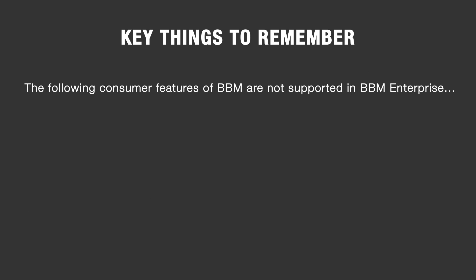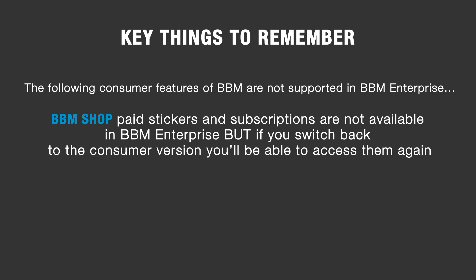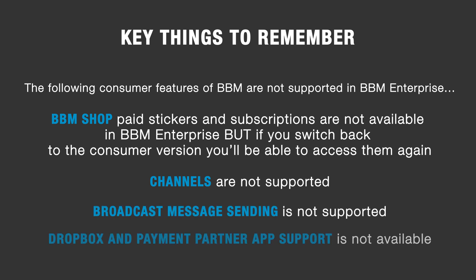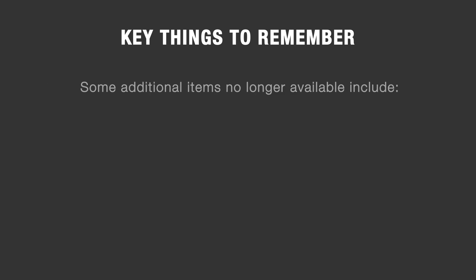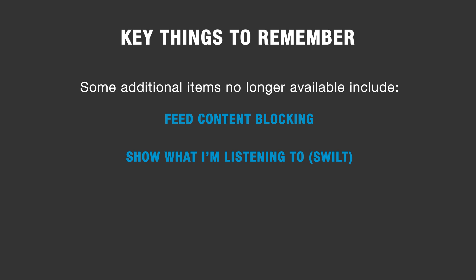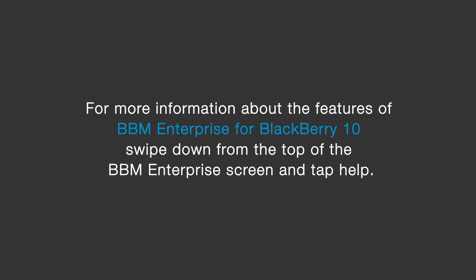The following Consumer features are not supported in BBM Enterprise: BBM Shop — paid stickers and subscriptions are not available, but if you switch back to the Consumer version you'll be able to access them again. Channels are not supported. Broadcast message sending is not supported. Dropbox and payment partner app support is not available. Some additional minor items no longer available include feed content blocking, show what I'm listening to, private chat, and share my PIN. For more information about the features of BBM Enterprise for BB10, swipe down from the top of the BBM Enterprise screen and tap Help.